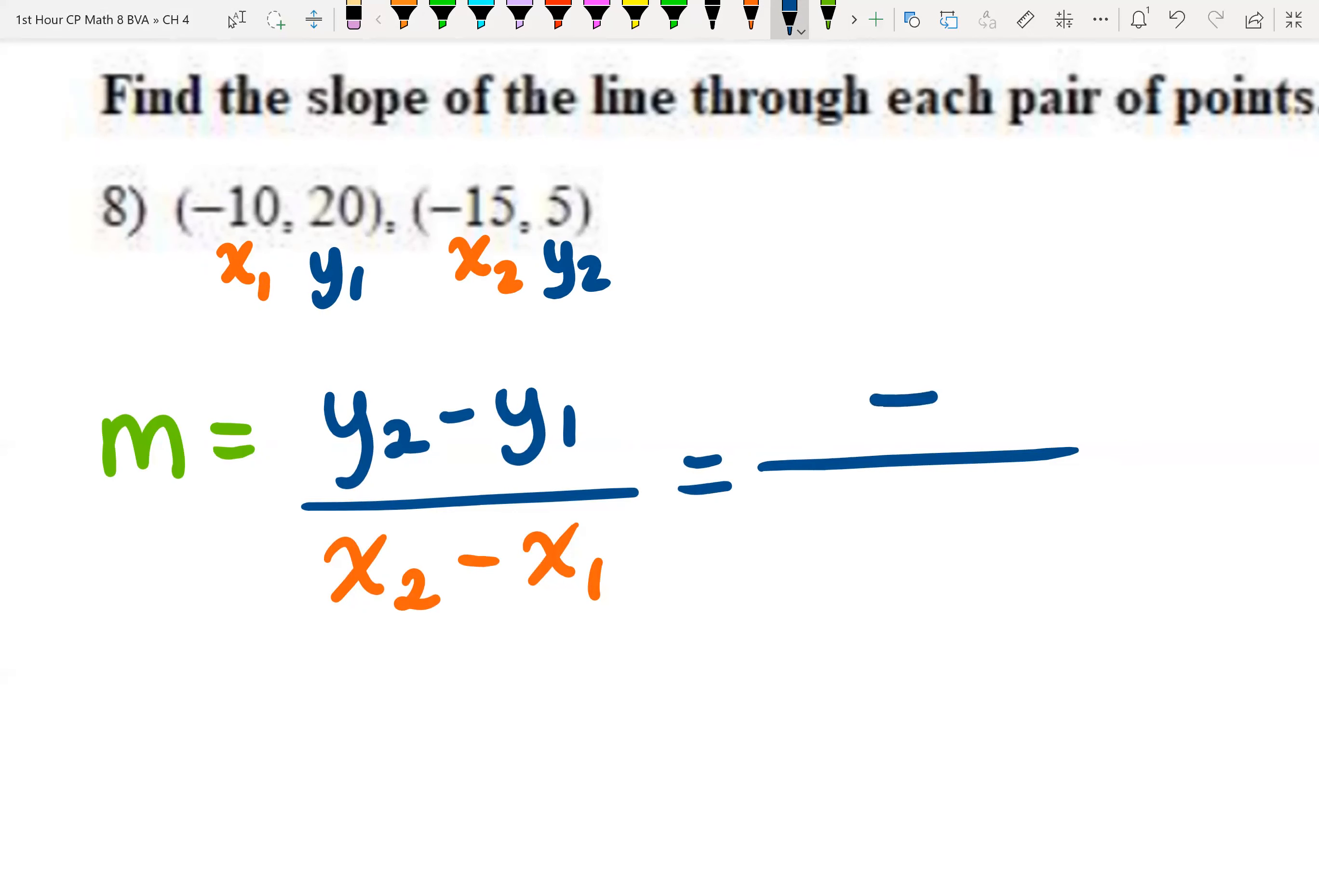Go ahead and insert them into the slope equation. And remember, these minus signs come with that slope equation, so put those in there too. Let's write down y2 minus y1, or 5 minus 20. And that x2 is negative 15, and x1 is negative 10. So put that negative 10 there.